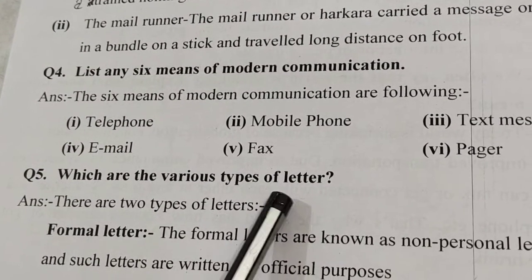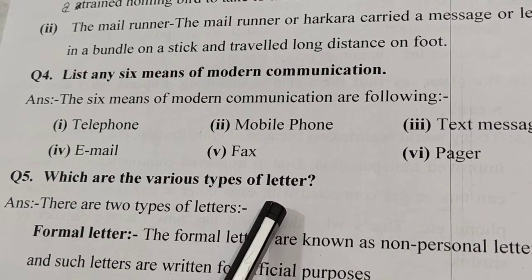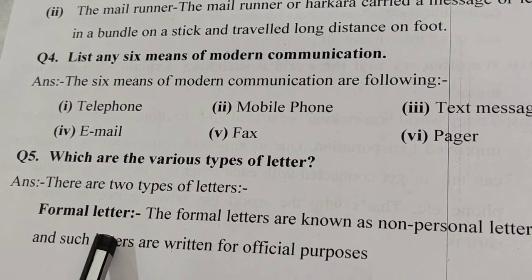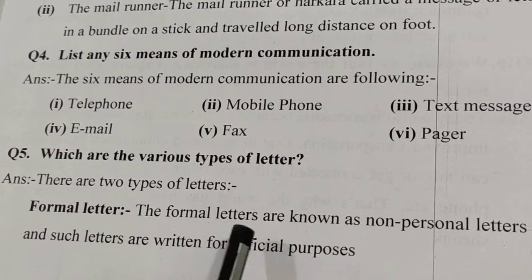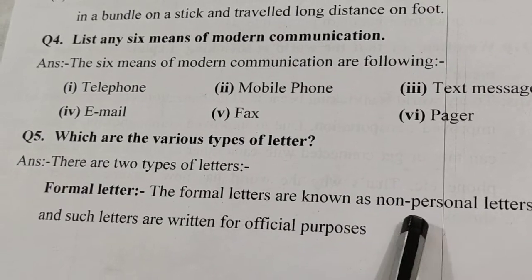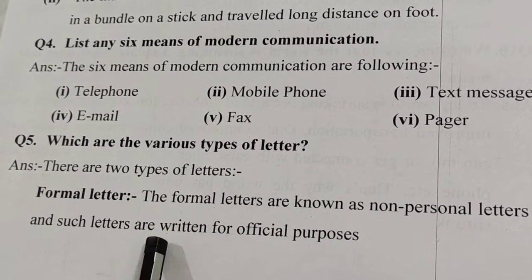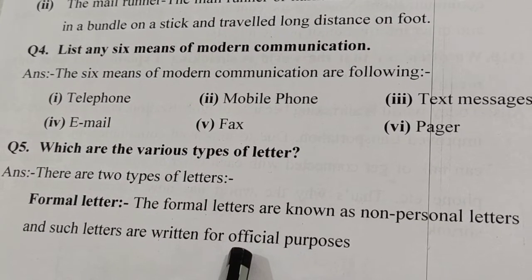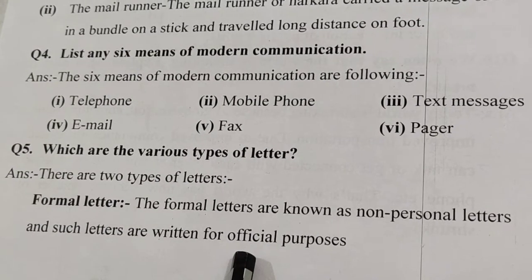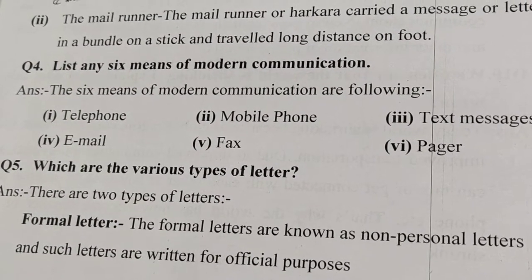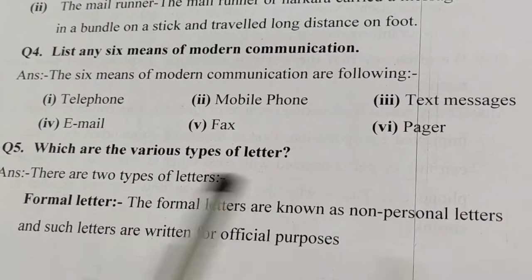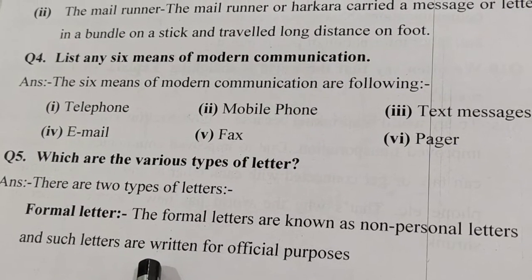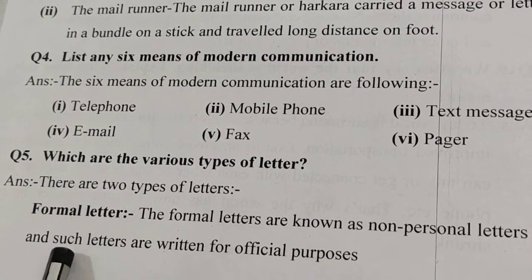Question five: What are the various types of letters? This also comes in your English subject. There are two types of letters. One is the formal letter. Formal letters are known as non-personal letters and are written for official purposes — for example, writing a letter to the principal, making a complaint to the municipality, or sending a message in a newspaper. Such letters follow a fixed format.